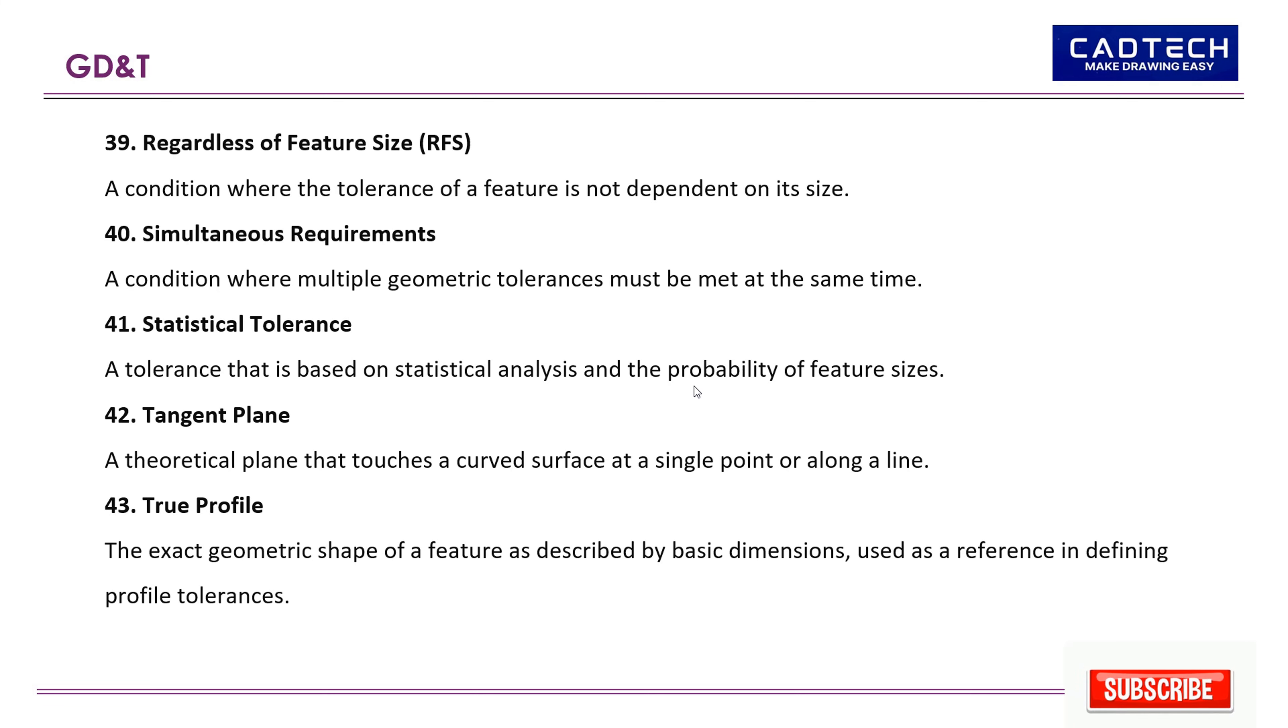44. Unequal bilateral tolerance: A tolerance where the permissible variation is not equally distributed around the nominal dimension. 45. Unilateral tolerance: A tolerance where the permissible variation is only in one direction from the nominal dimension.